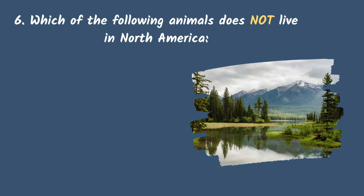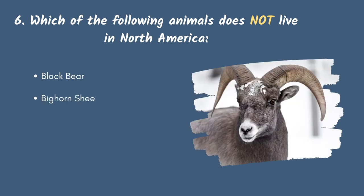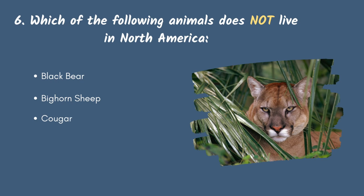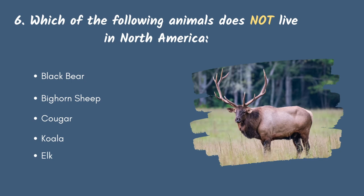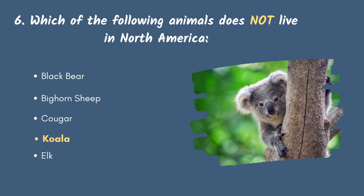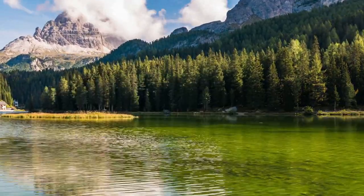Question 6, the last one: Which of the listed animals does not live in North America — black bears, bighorn sheep, cougars, koala or elks? This should be very easy for you to answer. Koala is actually an animal that is only found in the continent of Australia. Good job! I hope these simple questions refresh some of the information you were provided in this video.